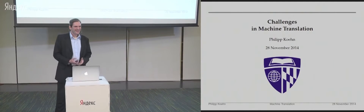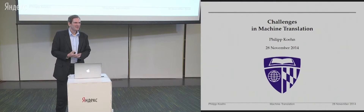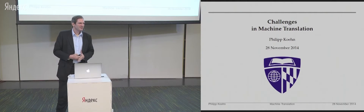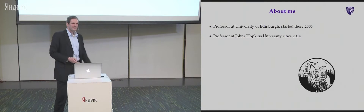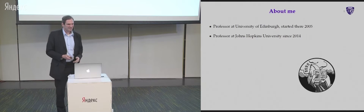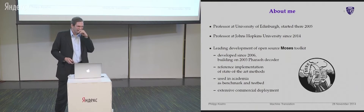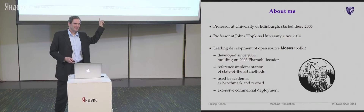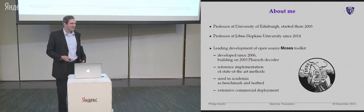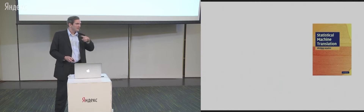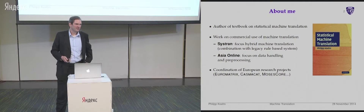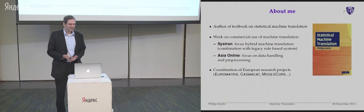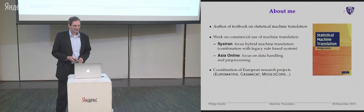Thank you for the introduction. Today I give a hopefully easily understood overview about research in statistical machine translation — the challenges and our current thoughts on how we address them. I'm a professor at University of Edinburgh and Johns Hopkins. If you want to try out the things I'm talking about, you can download the software and build machine translation systems at home. We've been developing this for now almost 10 years. I've been working on statistical machine translation for more than 10 years and also working with companies, so I have a bit of appreciation of the real world challenges of machine translation today.